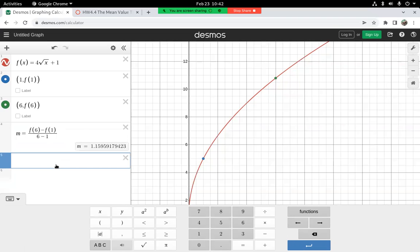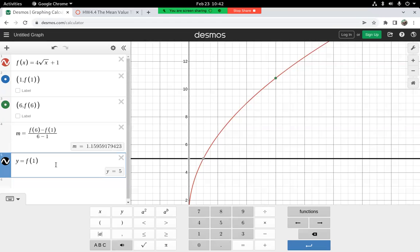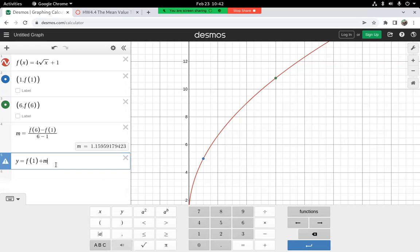So let's say I'm going to say y equals f of 1 plus that slope we found above m times x minus 1. So there's the line passing through those two points.